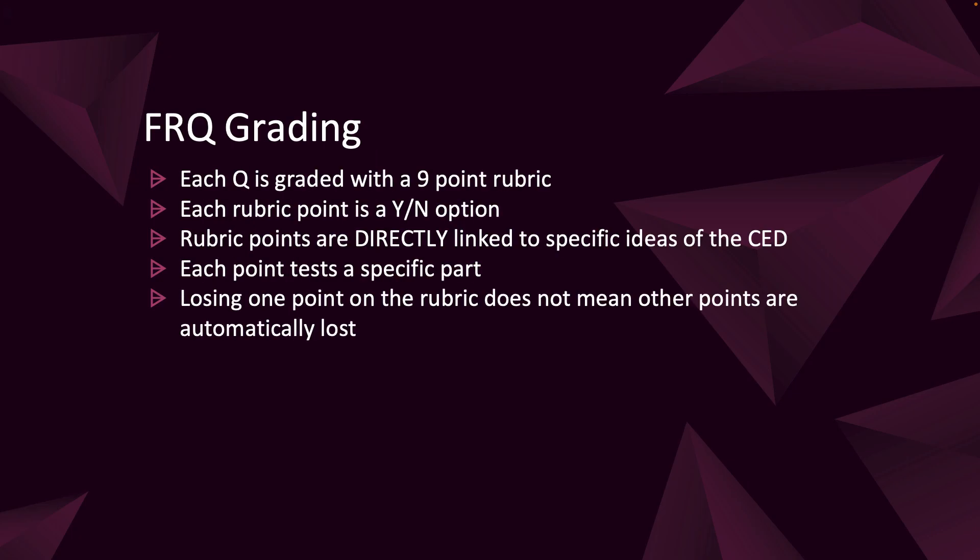For FRQ grading, each question is graded with a 9-point rubric. Each rubric point is either a yes or a no - you either get it or you don't. Rubric points are directly tied to specific areas of the course and exam description, the CED. Each point tests a specific group of points you need to know. If you lose one single point in the rubric, it doesn't mean you lose all the other points. We move on to the next part and grade that part accordingly.